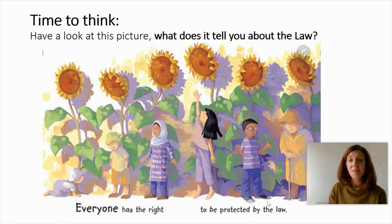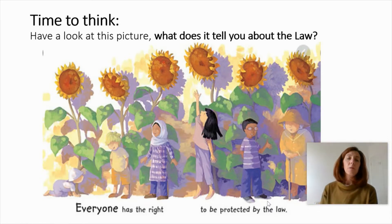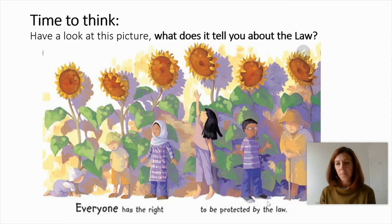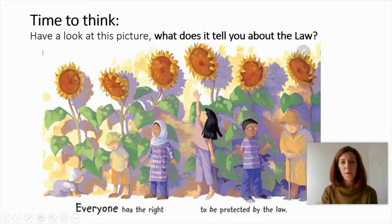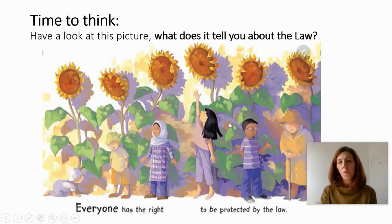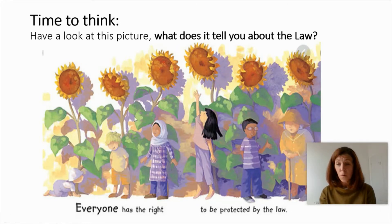Perhaps another way to consider it is to have a look at this picture. What does it tell you about the law? As you can see, you've got a row of sunflowers arching over a line of people — people who are of different ages, different gender, different race. And it says: everyone has the right to be protected by the law. So rather like the sunflowers, the right to be protected by the law is one of our rights.